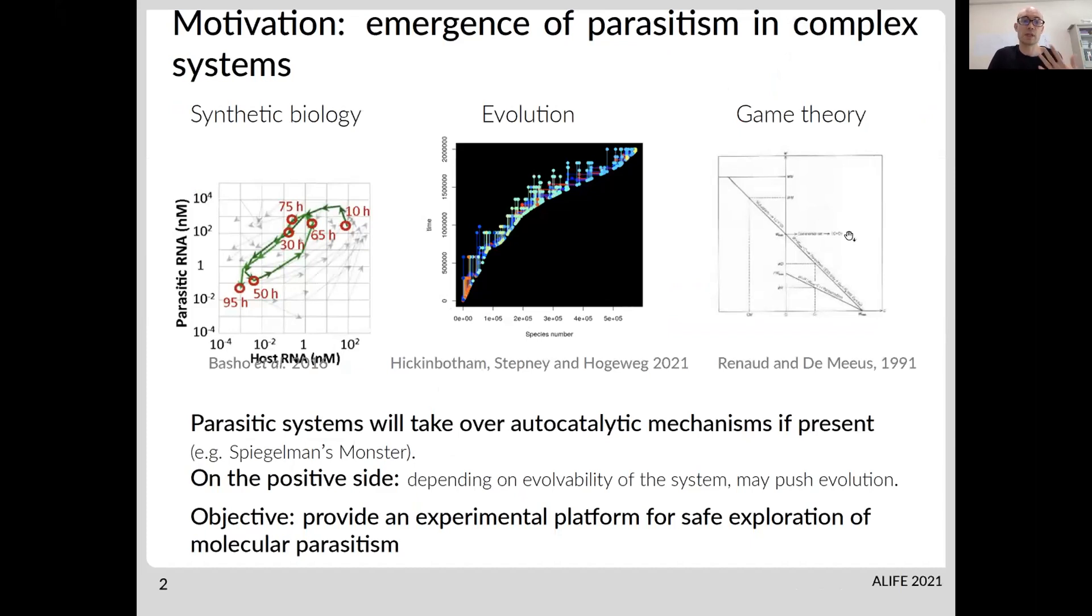So there are examples of this happening whenever you have an autocatalytic system or mechanism present in a molecular environment. So one of the most famous examples would be Spiegelman's monster, but you have examples using RNA replication. You have examples in silico where you would perform evolution of species in the presence of parasites. Parasitism is actually a good strategy to overcome the system.